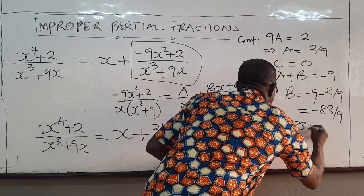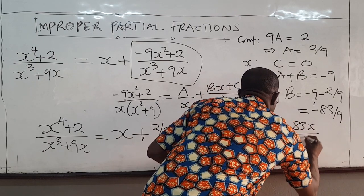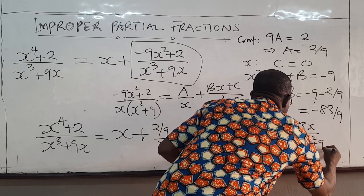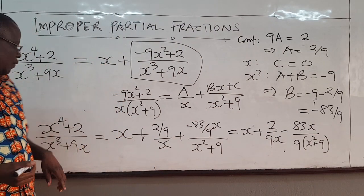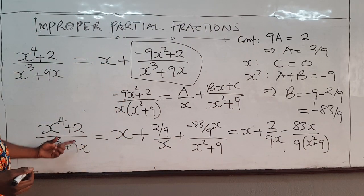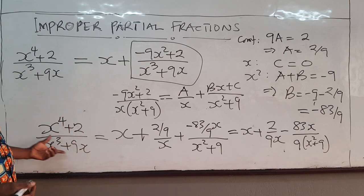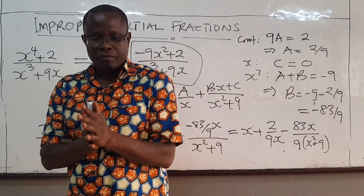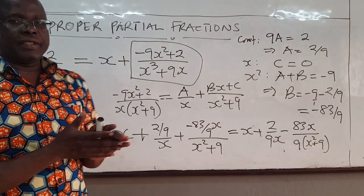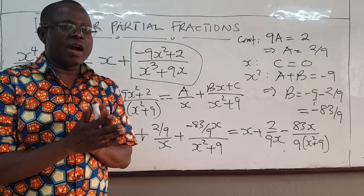Minus 83x over 9 multiplied x squared plus 9. And so the partial fraction decomposition of this improper fraction now is equal to this side. So you can practice with this and some of the other exercises that you have.